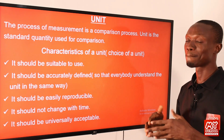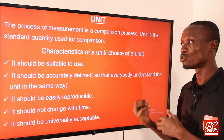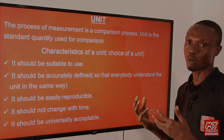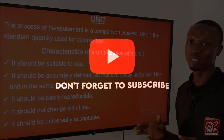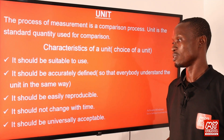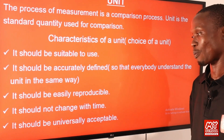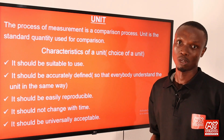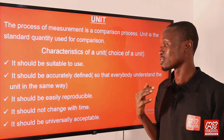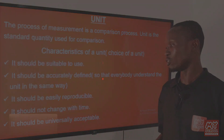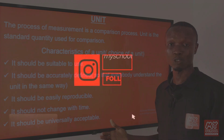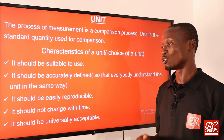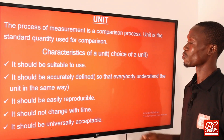For example, the unit of mass is kg — that unit is suitable for mass. Number two: it should be accurately defined so that everybody understands the unit in the same way. Number three: it should be easily reproducible — it should be something that everyone can copy. Number four: it should not change with time. For example, the unit of time is second — before I was born till now, it still remains second. And lastly, it should be universally acceptable. For example, the unit of time everywhere in the world is measured in seconds.